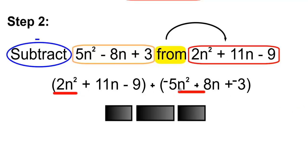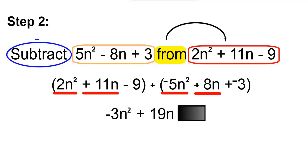2n squared and negative 5n squared is negative 3n squared. Plus 11n and plus 8n will be plus 19n. And minus 9 and minus 3 will be minus 12.